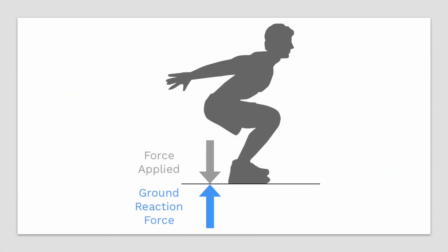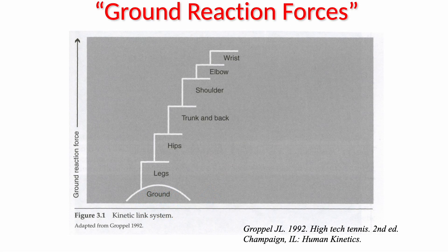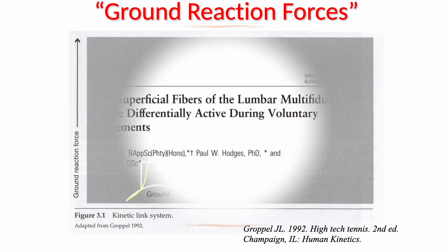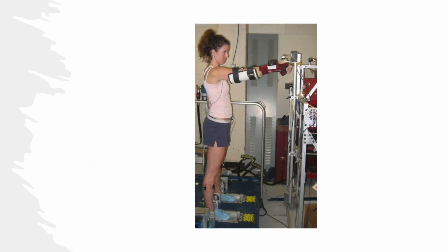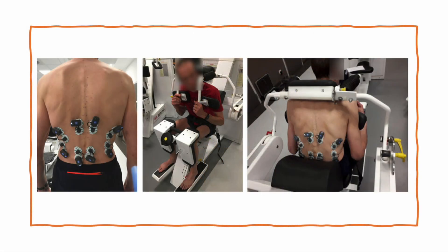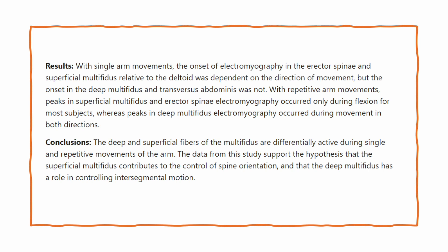When we are running or jumping, ground reaction forces are formed as counter forces of the applied force. The ground force transfers its energy to our body chain sequentially. These movement patterns are pre-programmed, starting from the leg to hip, trunk, shoulder, etc. The sequence and timing of each muscle are also pre-programmed. For example, each component of the deep back muscle activates differentially in the lumbar multifidus — deep and superficial fibers. Researchers observed peaks in the superficial multifidus and erector spinae only during flexion, whereas peaks in the deep multifidus occurred during movement in both directions.